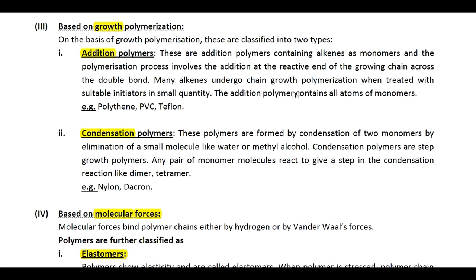There is no elimination of any small molecule in addition polymerization. Examples include polythene, PVC (similar to polypropylene but with chloro as the branch instead of methyl), and Teflon — the structure of which we will study later.